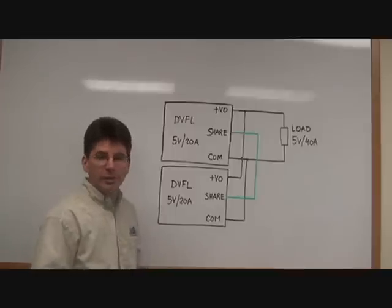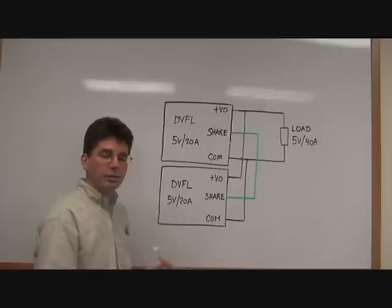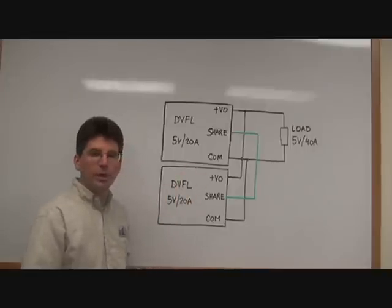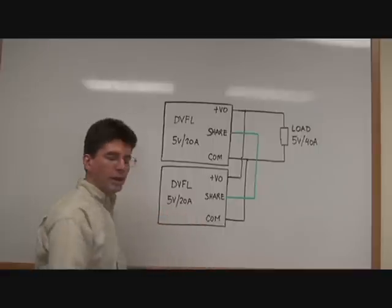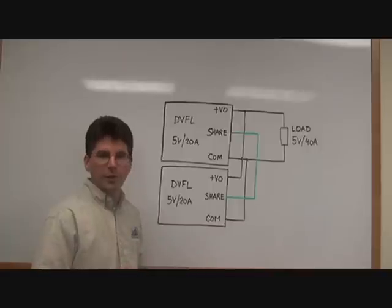The share line itself is fault tolerant, so in a redundant case or in a case where you don't require 40 amps, one module could fail and would not force some kind of system failure.